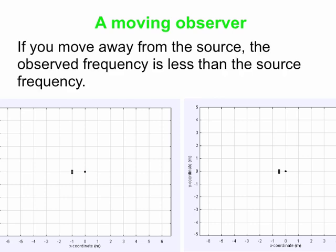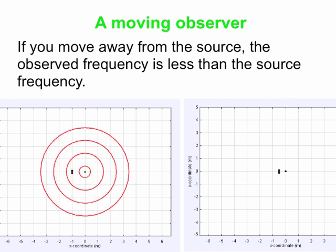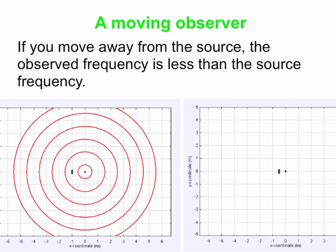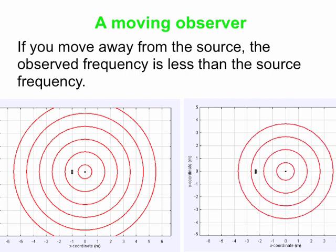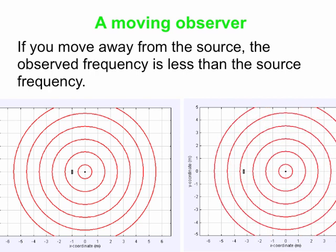For completeness, when the observer moves away: on the left we see everything stationary, with waves washing over you at a particular rate. If you move away from the source, the waves have trouble catching up to you, so you get hit by a lower frequency of wave fronts than when you were at rest.